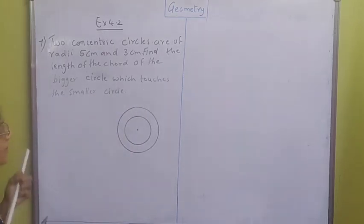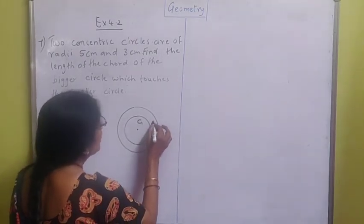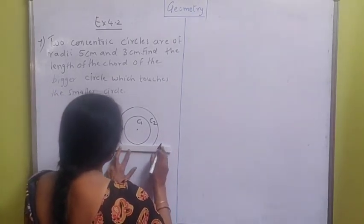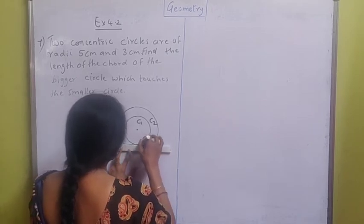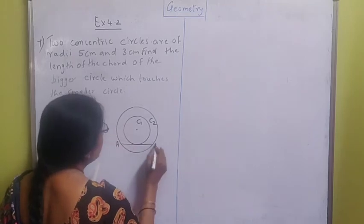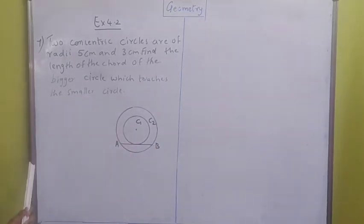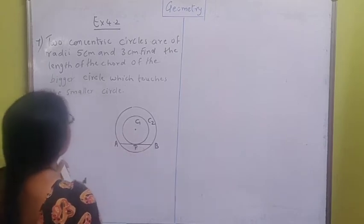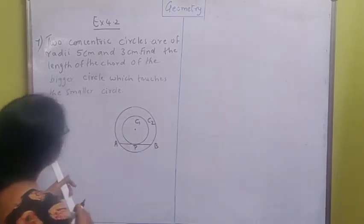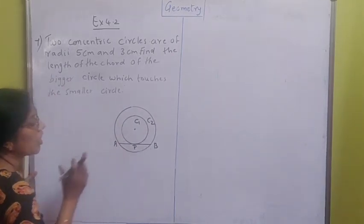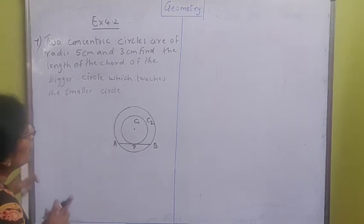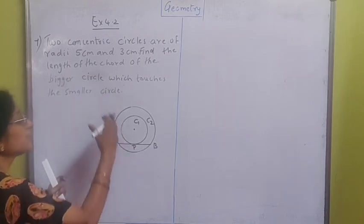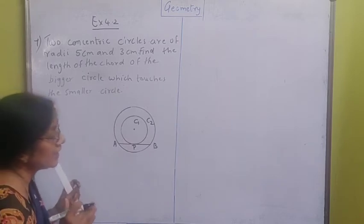So, what we will take is that let C1 be the smaller circle and C2 be the bigger circle. There is a chord; the chord is for the bigger circle. I am going to draw a chord AB to the bigger circle such that it touches the smaller circle C1 at P. And he tells us to find out what is the length of this chord AB. C1 is the smaller circle, C2 is the bigger circle. Radius of the smaller circle is given and radius of the bigger circle is given.